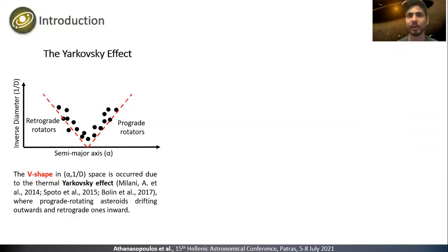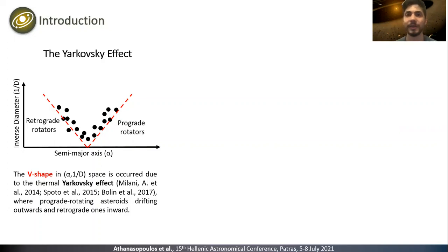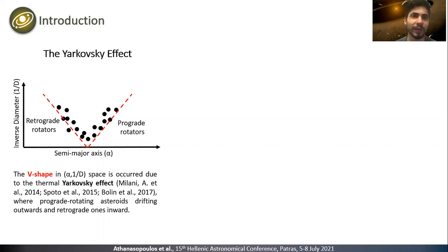Apart from gravitational forces, the small bodies of our solar system are also affected by thermal forces. The Yarkovsky effect is a thermal radiation force that causes semi-major axis drift. In the plane defined by the semi-major axis and the inverse diameter, the fragments of a collision — the asteroids of the same family — form a characteristic V-shape due to the Yarkovsky effect, which is inversely proportional to asteroid size, while the retrograde rotators drift inwards and prograde rotators drift outwards.